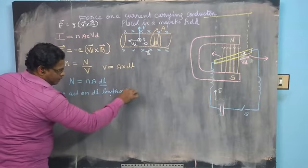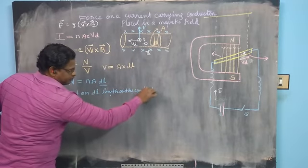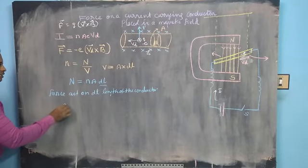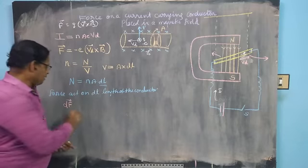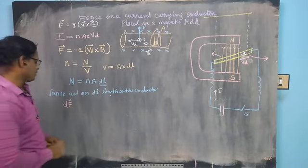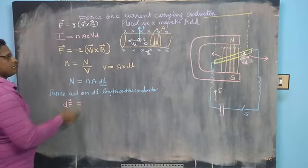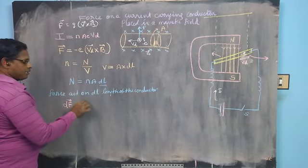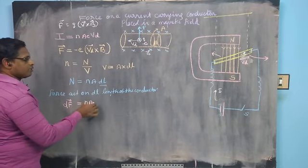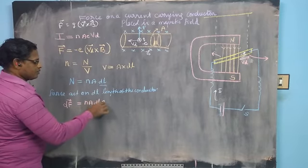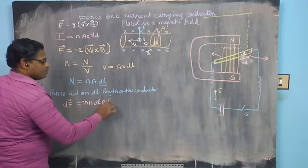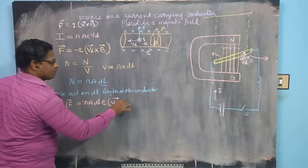For the dL length of the conductor, the force dF is equal to the number of electrons in that element times the force on each electron. So dF = n × A × dL × (−e) × Vd × B, which gives dF = −nAe(dL) × Vd × B.